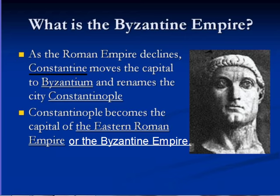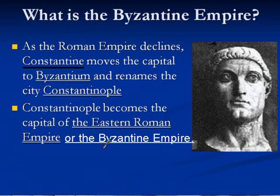We're talking about the Byzantine Empire. As the Roman Empire declines, the Emperor Constantine moves the capital from Rome to Constantinople, which is in the east. Eventually, Constantinople remains powerful, and it remains the center of the Eastern Roman Empire, also known as the Byzantine Empire.